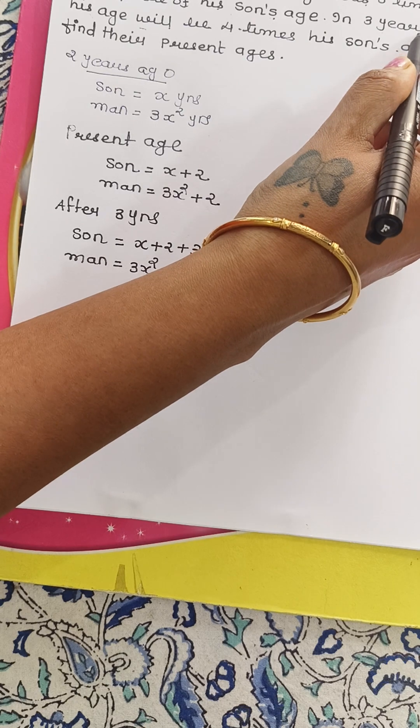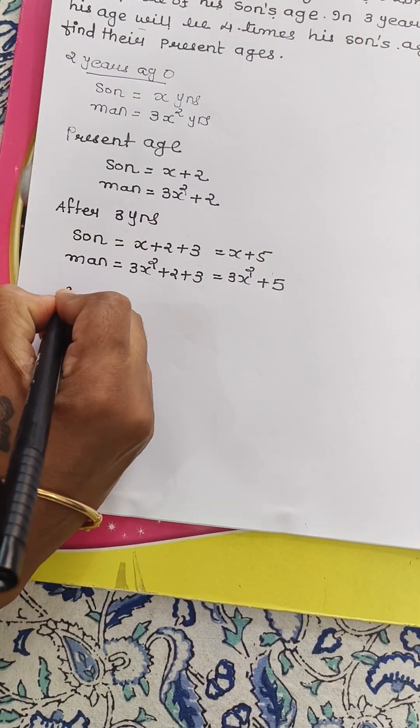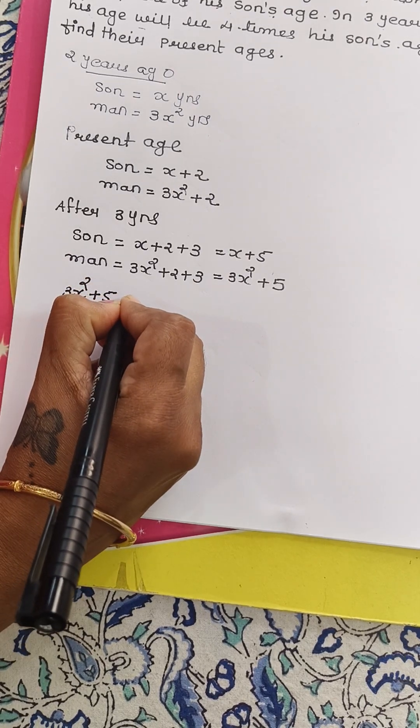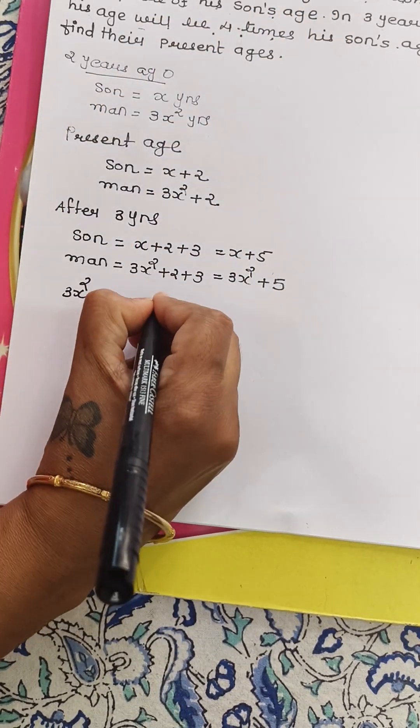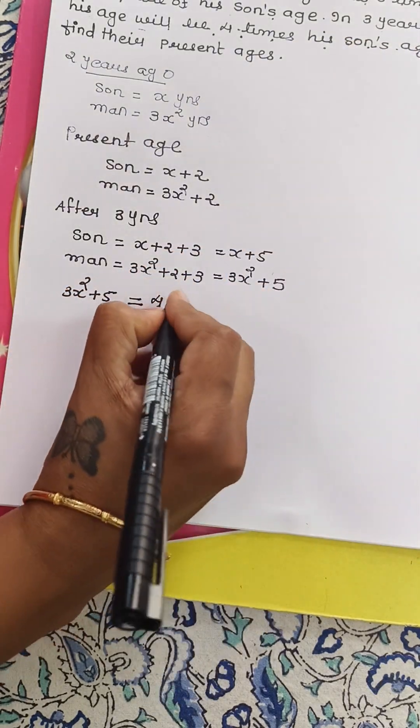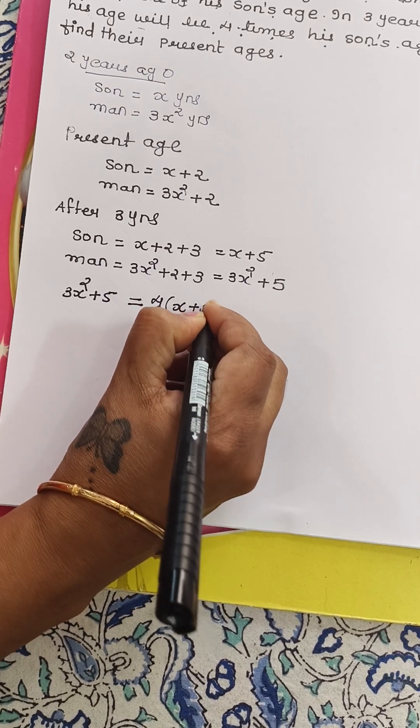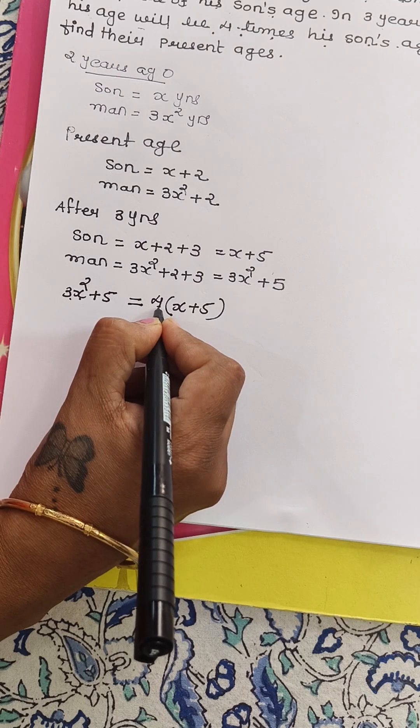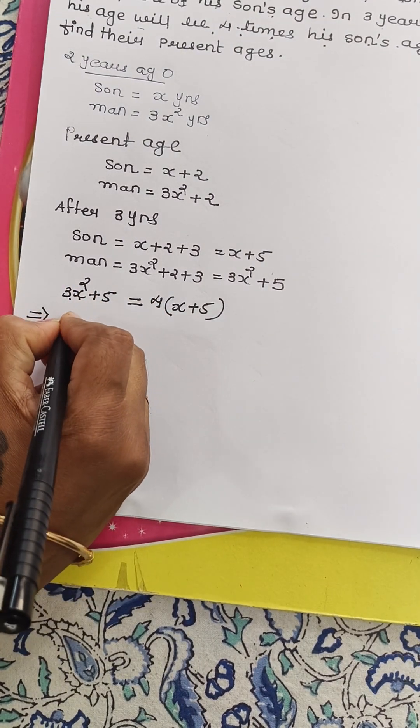In three years, his age will be, we are talking about man. So 3X square plus 5 will be equal to 4 times, 4 times his son's age. What is the son's age after three years? X plus 5. So 3X square plus 5 is equal to 4 times X plus 5.